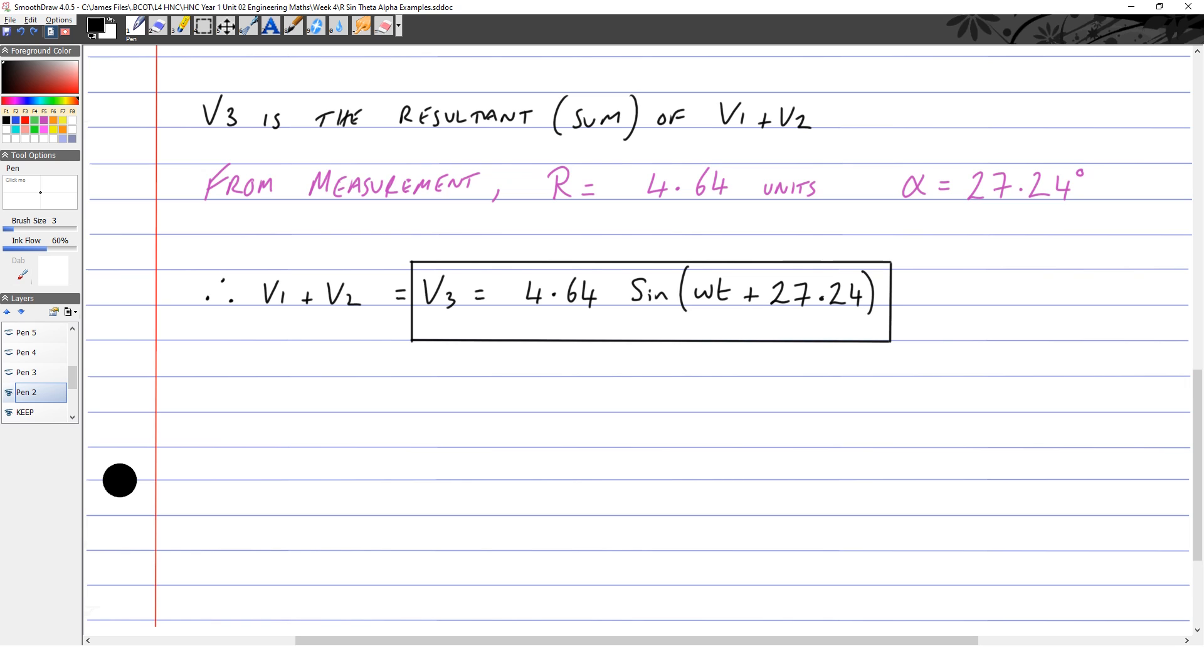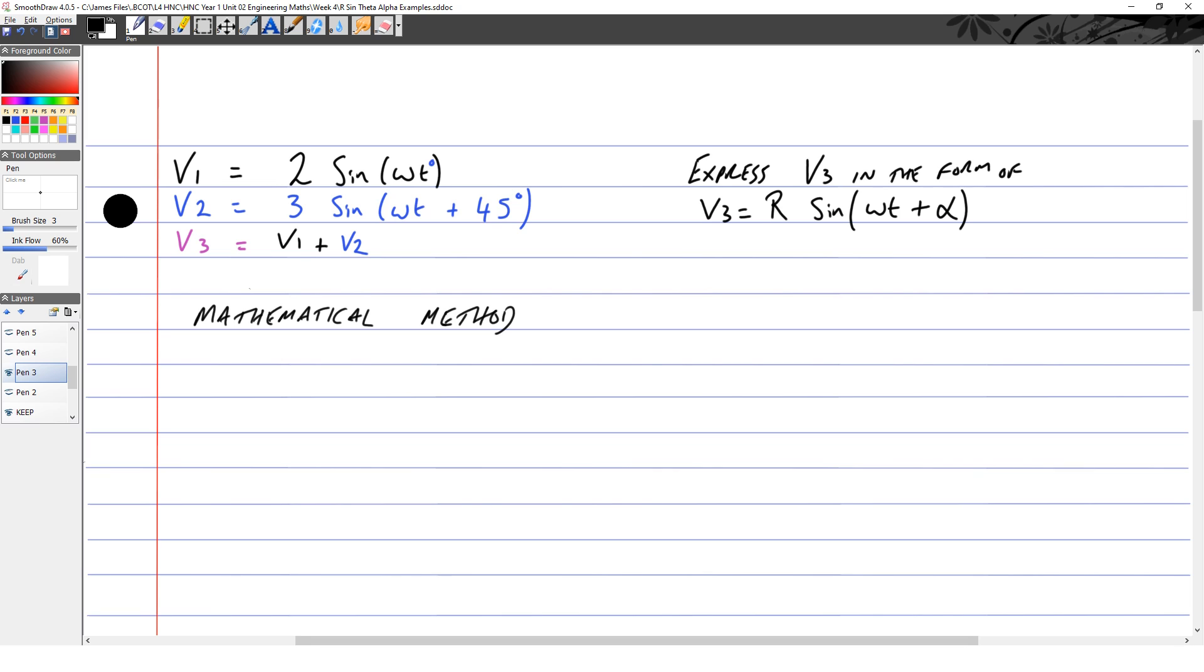So that's the graphical method. We're going to do the mathematical or trigonometrical method with the same numbers. V1 is 2 sin(ωt). We're going to leave that be for now, keep it to one side for later.